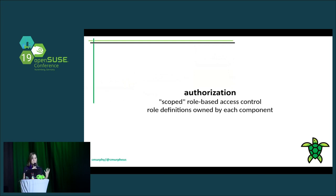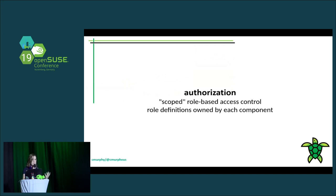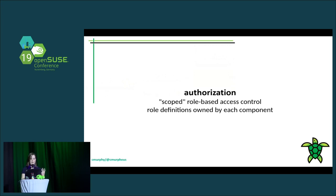That was all about authentication, which Keystone does really well. The next important part of Keystone is authorization, which is about granting users the right level of access to the things they need — making sure users are allowed to do what they're requesting. This is where things get a little bit complicated, and where Keystone and OpenStack suffer a little bit, because this is where multi-tenancy makes things complicated.